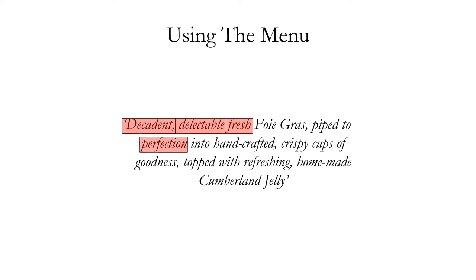'Piped to perfection' — again, this is subjective. Your perception of perfection and my perception of perfection might be different things. Don't tell me something is going to be perfect. I saw this word used on a menu — something was 'cooked to perfection' — well, it better be cooked to perfection when I buy it, or I'm going to be disappointed because you told me it was going to be perfect. Avoid using those sorts of descriptions when writing a menu.